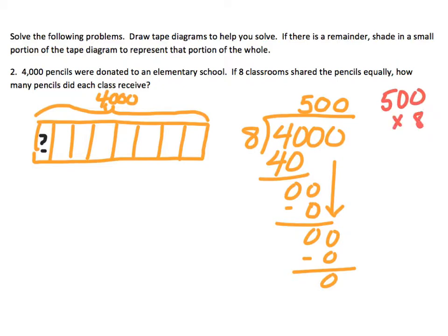So let's take a look. 500 times 8, and 8 times 0 is 0. 8 times 0 is 0, and then 8 times 5 is 40, and we know that's 40, 100, so my answer, 4,000. It matches the dividend, and now I just need to write out a statement answering the question.